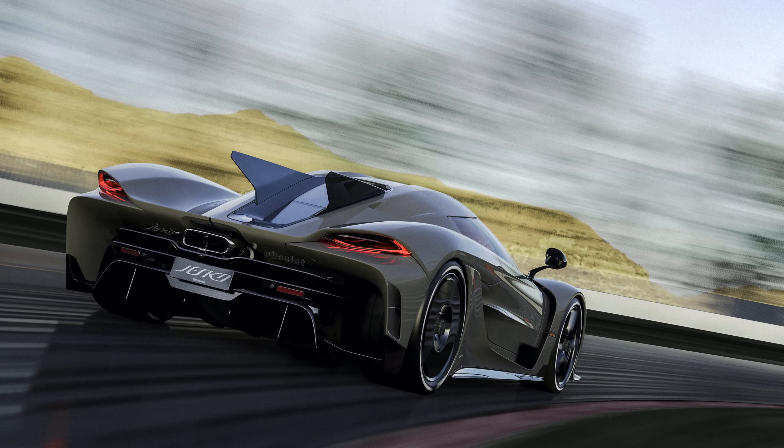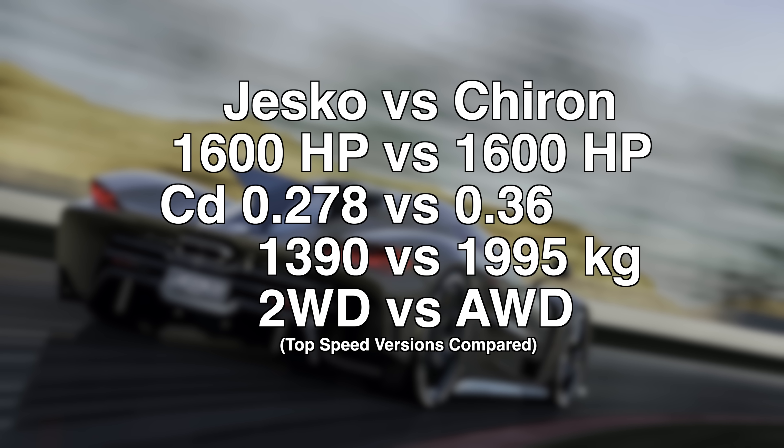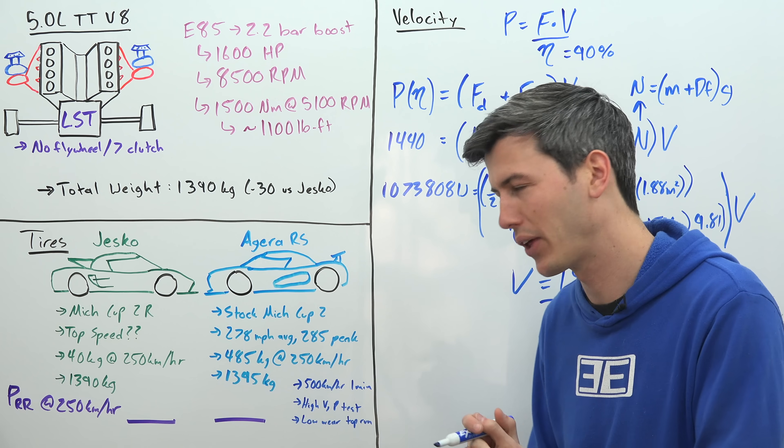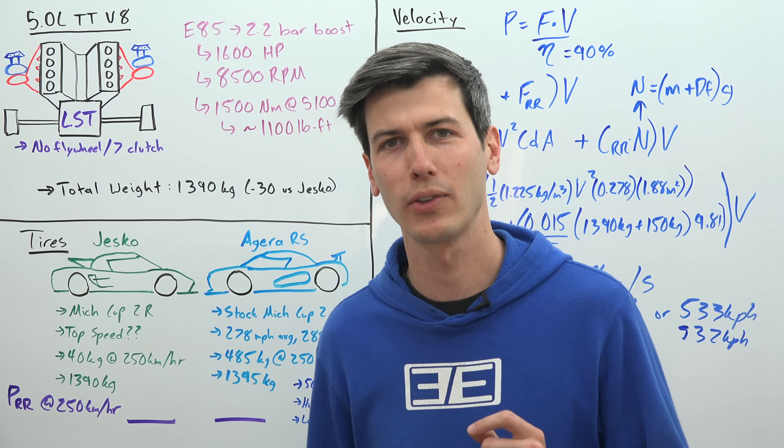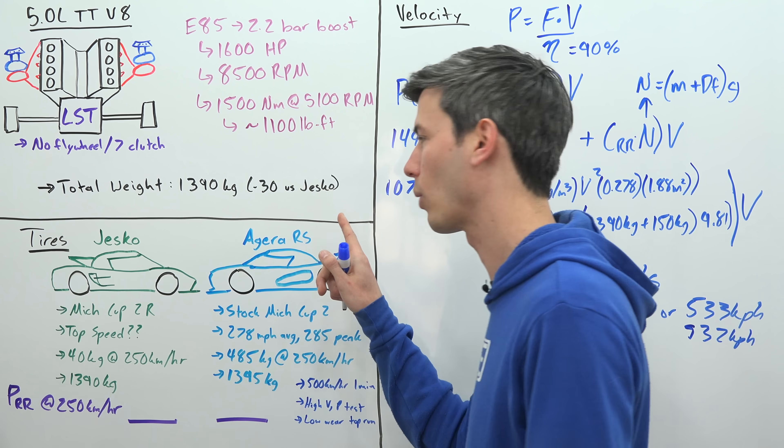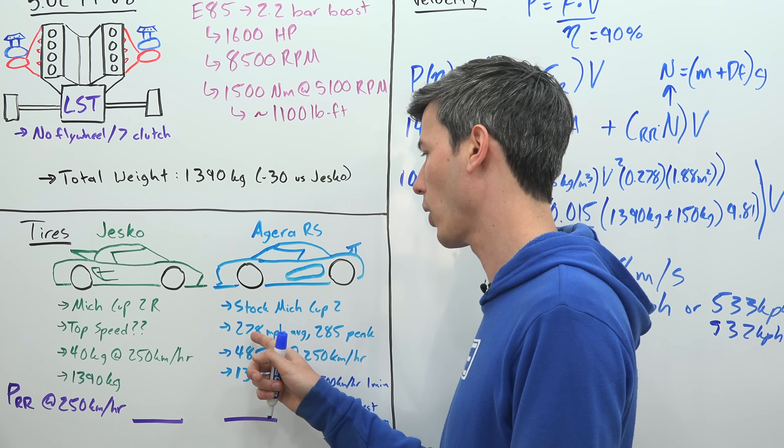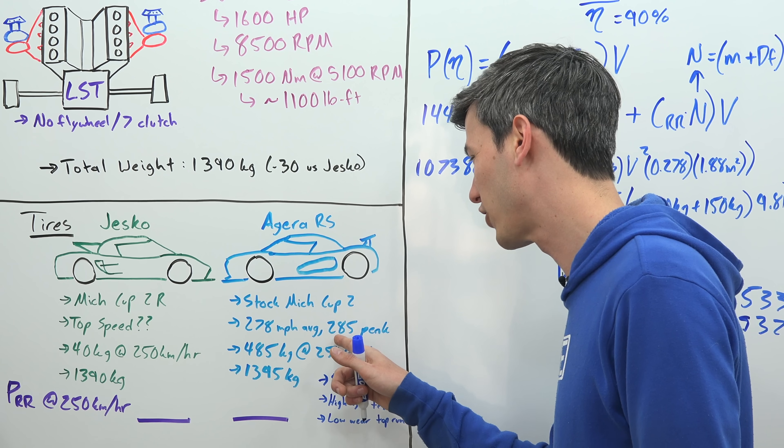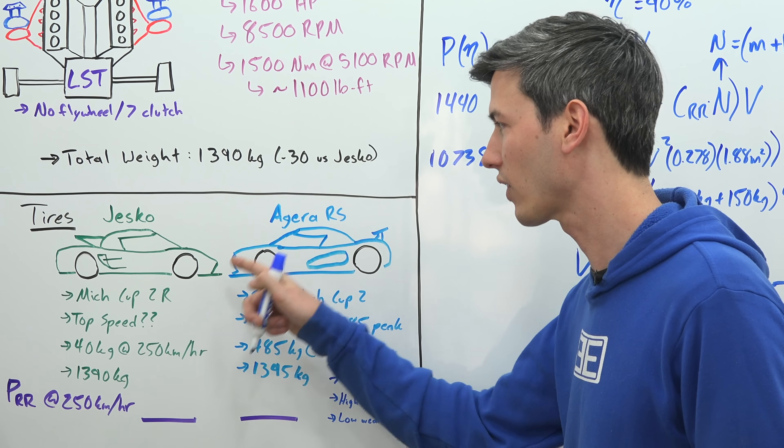Now you can say that fairly confidently because compared to the Chiron, the Koenigsegg Jesko Absolute has the same amount of horsepower, but it has better aerodynamics and it has two-wheel drive rather than all-wheel drive, so probably less losses actually getting to the wheels. Now you might wonder about tires, and that's a completely reasonable thing to wonder about. However, Koenigsegg doesn't seem that worried, and the reason why is because the Jesko Absolute is much kinder to tires than the Agera RS, which is what Koenigsegg did their top speed run in. If you recall, the Agera RS was on stock Michelin Cup 2 tires and it drove an average speed of up to 278 miles per hour, with a peak, which is what the tires actually care about, of 285 miles per hour. So yes, the Jesko is going to drive faster than this, however it's kinder to the tires. Why?